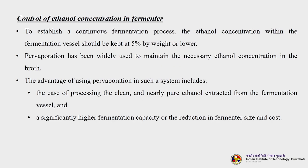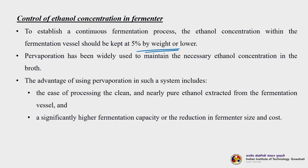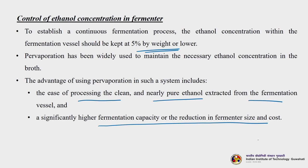Another classic example is control of ethanol concentration in a fermenter. To establish a continuous fermentation process, the ethanol concentration within the fermentation vessel should be kept at 5 percent by weight. Ethanol is continuously produced by microorganisms, and if not removed, the ethanol concentration increases. Additional ethanol beyond 5 percent becomes toxic to the microorganisms, thereby inhibiting growth and performance, so no more ethanol is formed. Pervaporation has been widely used to maintain the necessary ethanol concentration in the broth, with the advantage of obtaining extremely pure ethanol directly, and achieving a significantly higher fermentation capacity and reduced fermenter size and cost.